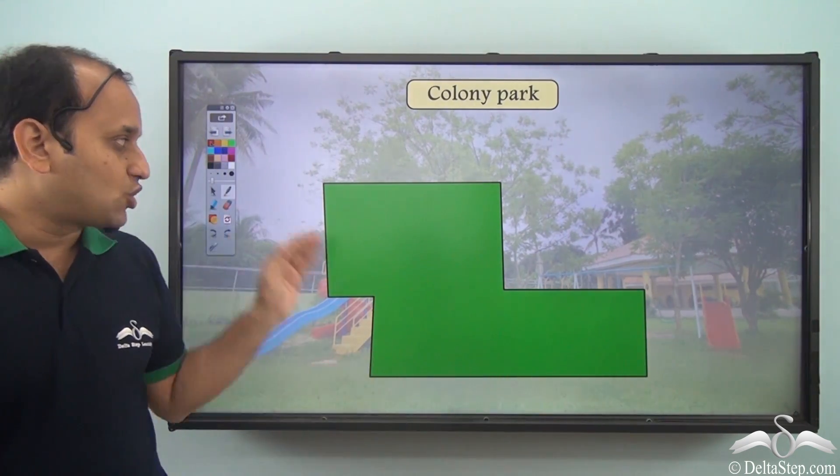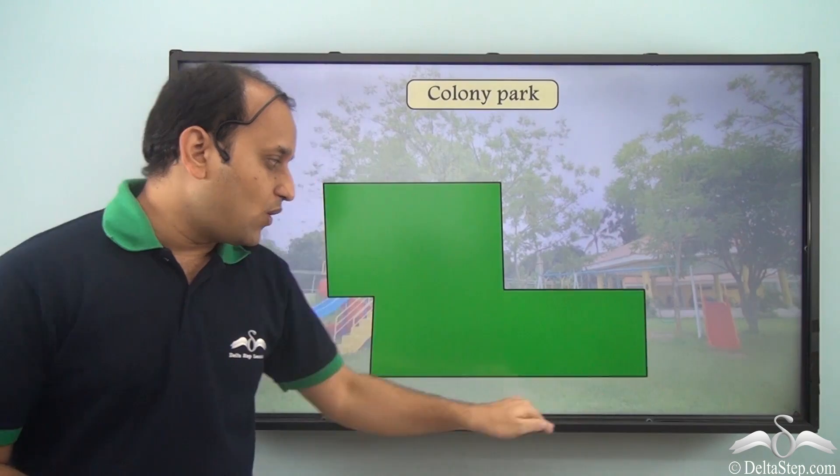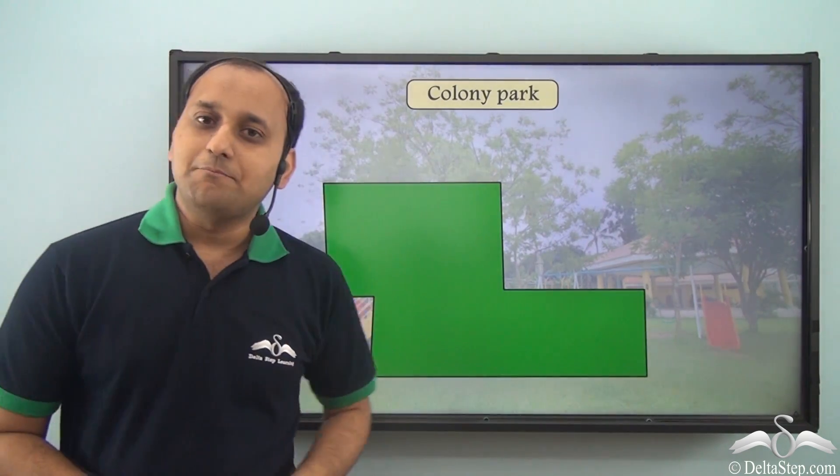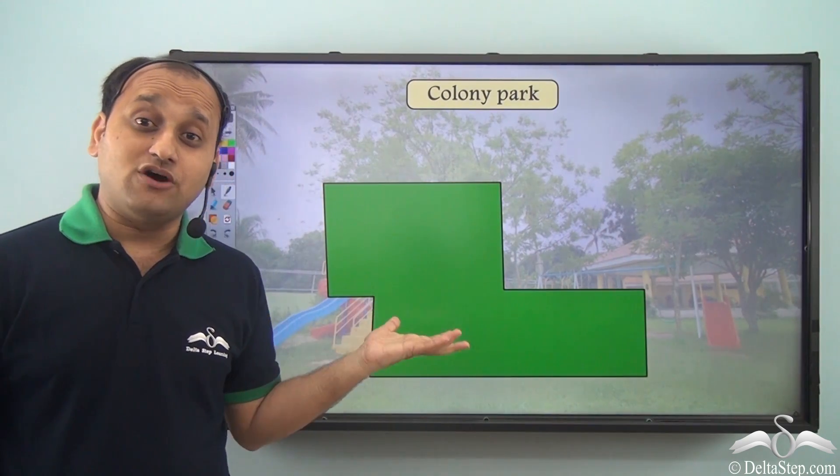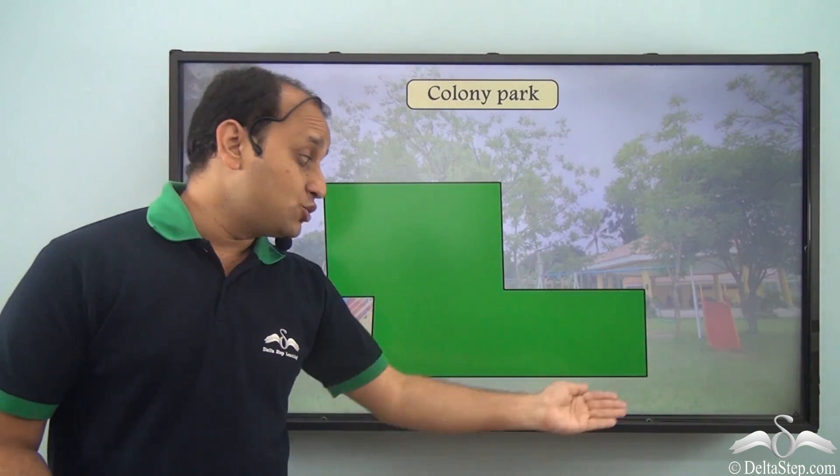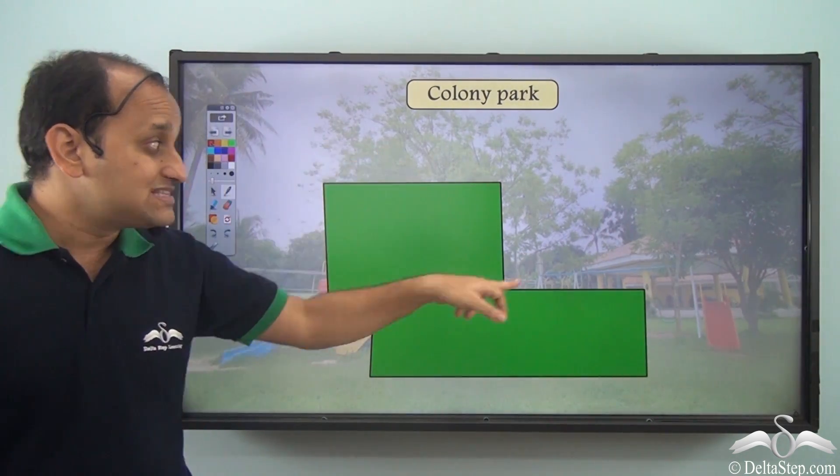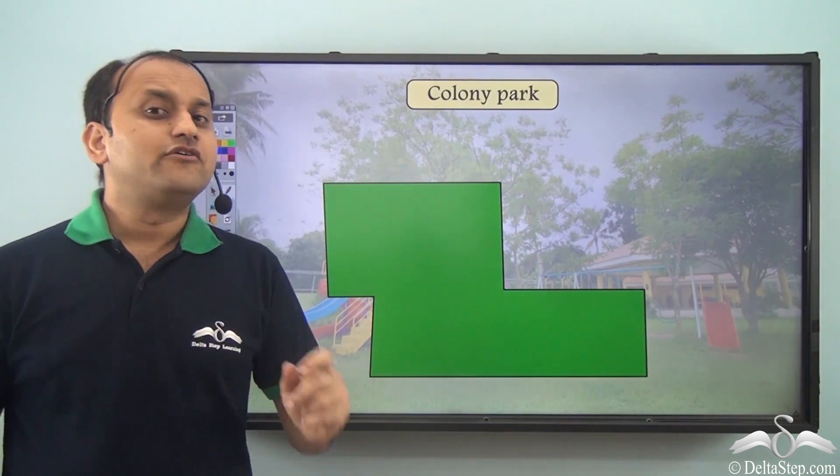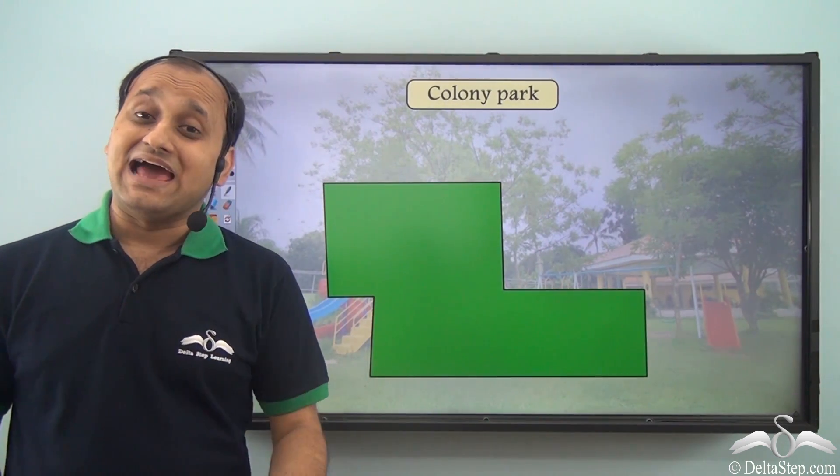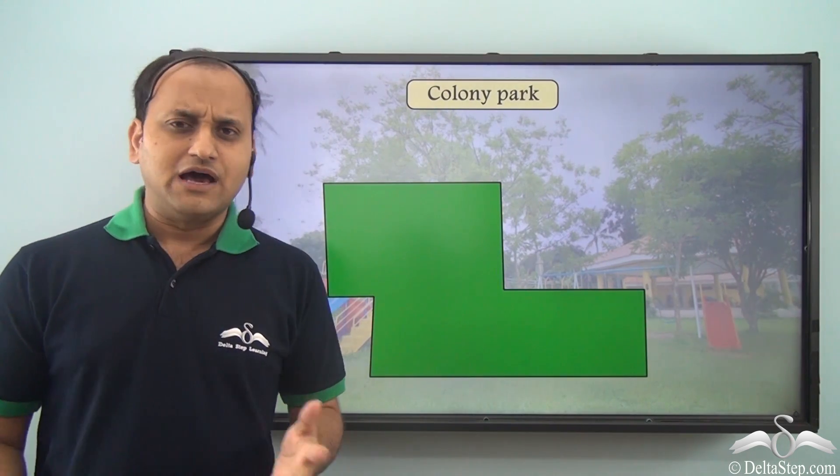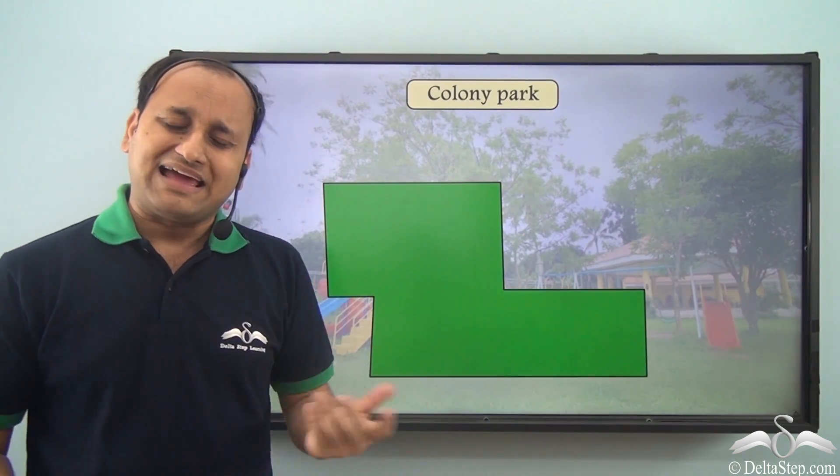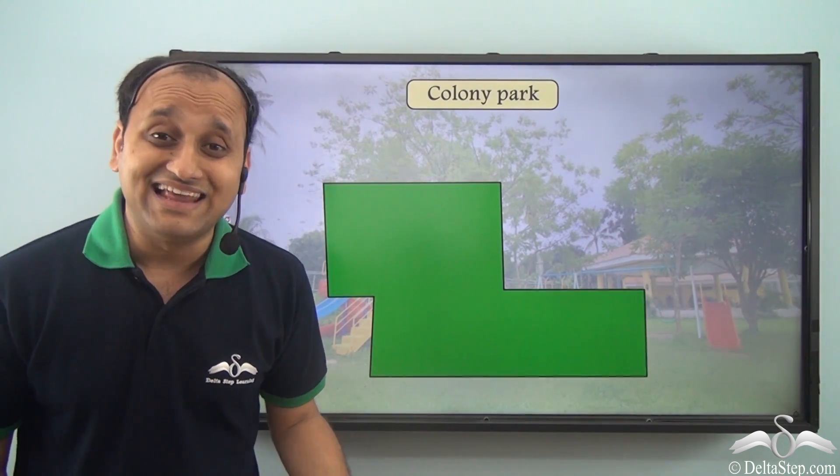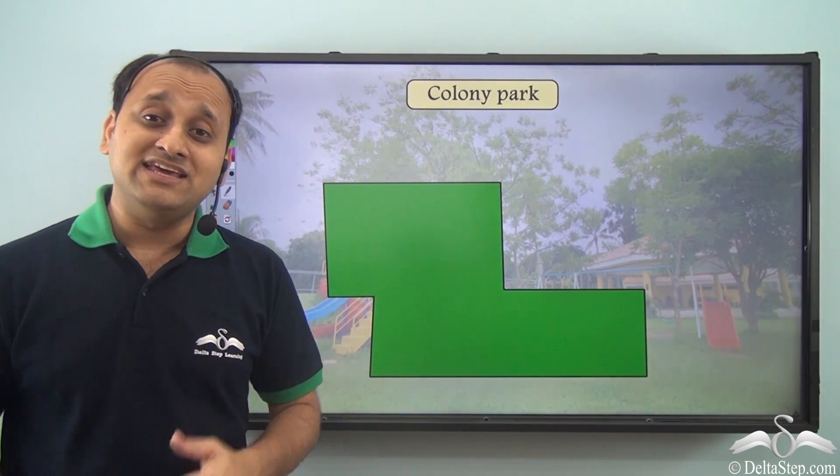So they decided they will install nets on all the sides of the park. The next question was what will be the length of the net that they need to purchase to cover all sides of the park? Well, for that they took the help of Ravi's uncle. Now Ravi's uncle said that it's very simple, just calculate the perimeter of the park and that will be the length of the net that you will need.